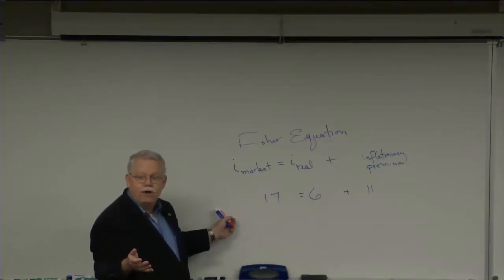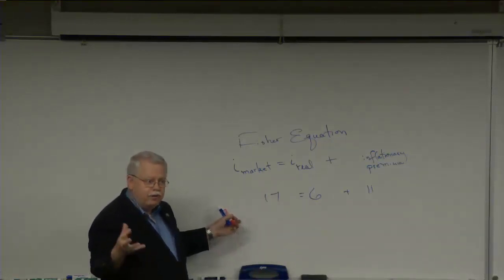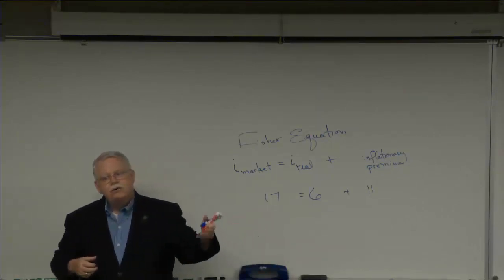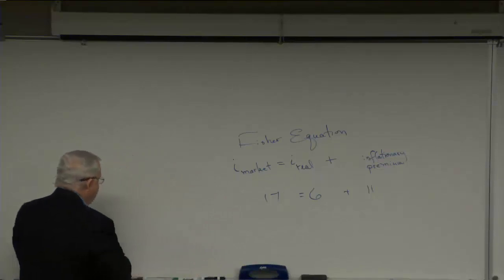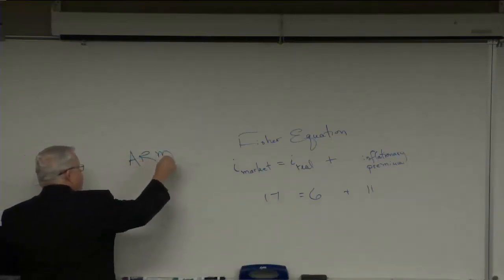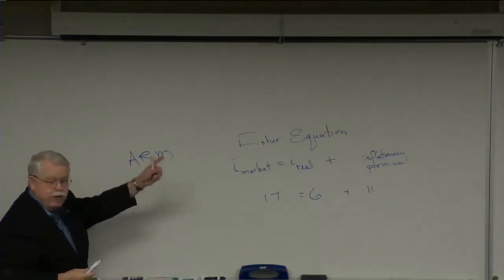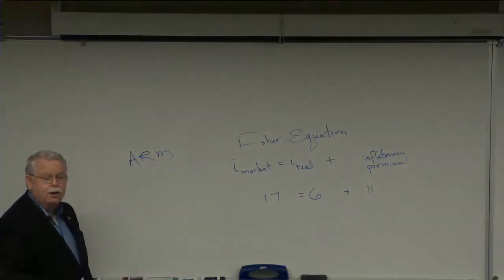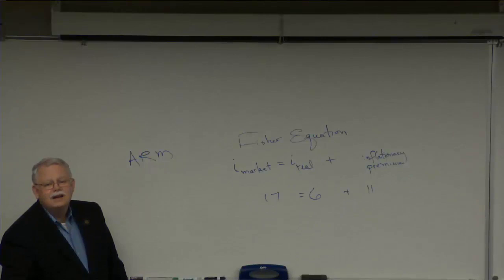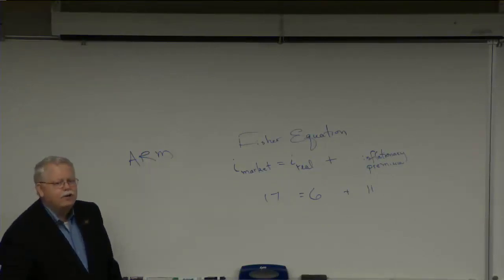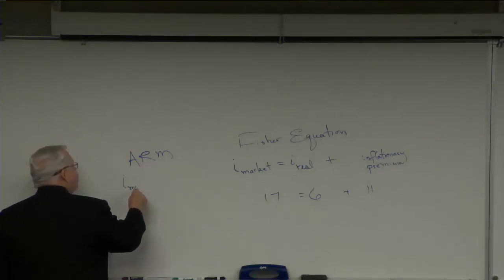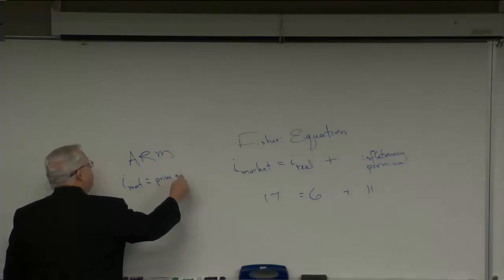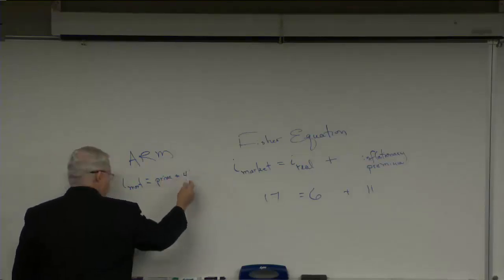They had money loaned out at 4 and 5 and 6 percent that, if they could just get it back, they could be loaning it out at 12 and 13 and 14 and 15 percent. So as a result, they came up with an adjustable rate mortgage, which is taken right from the Fisher equation. The 6 percent they lose is not monetary but opportunity cost, not monetary. Good point.